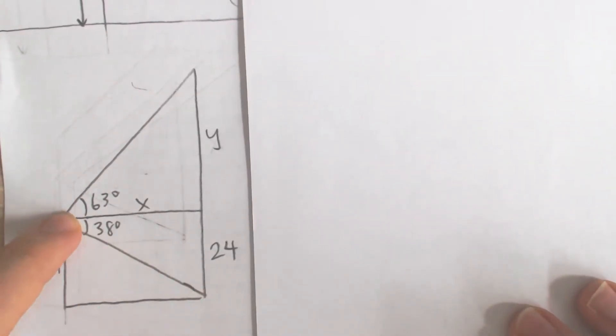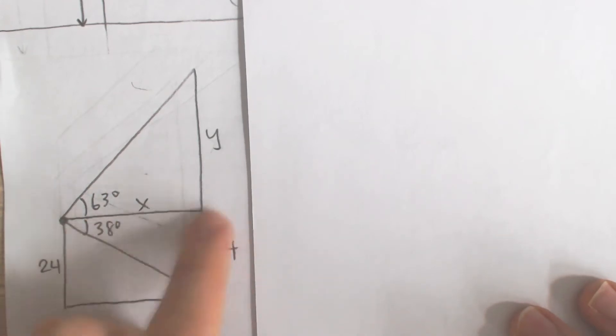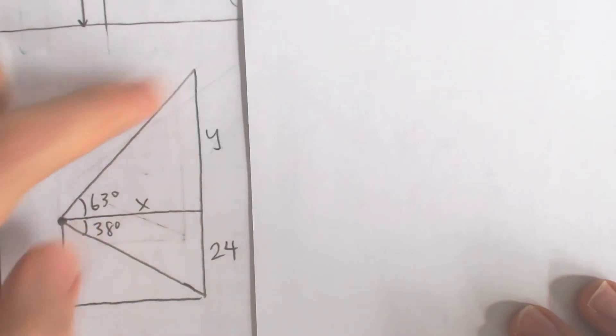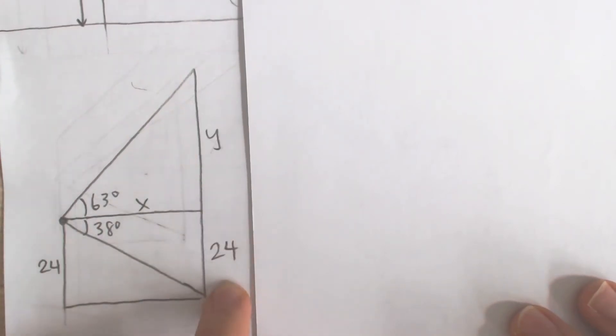We have a diagonal here that goes down at 38 degrees. The distance between us and the building, I'm going to label x, and I'm going to label this length y. We know that this bottom length here is also 24 meters because it's the same side, just on the opposite side.